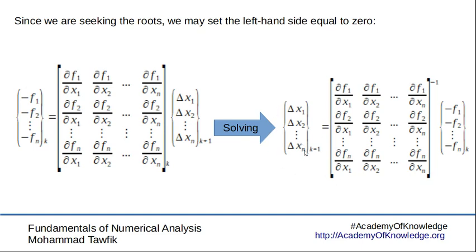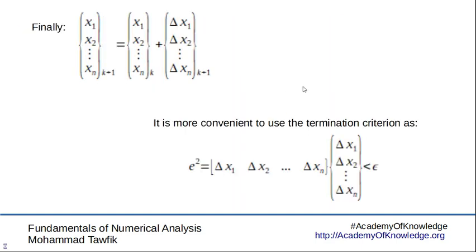This becomes a new approximation for the solution that can be used several more times to find the set of variable values that make all functions simultaneously equal to zero. We iterate until the deltas become sufficiently small. The error is computed by multiplying the delta vector by itself and checking whether it is less than the allowed tolerance.